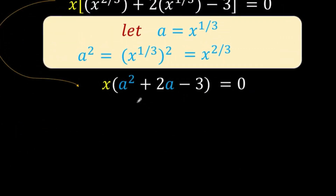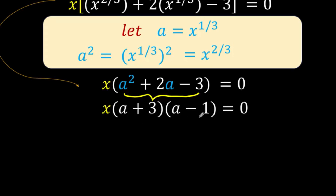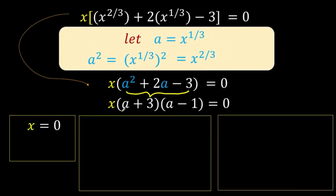From this, notice that a squared plus 2a minus 3 is factorable. The factors of this trinomial are the quantity a plus 3 times the quantity a minus 1. We copy the x and equals 0. We now have 3 factors whose product is 0, meaning at least one of them must equal 0. That means x equals 0, or a plus 3 equals 0, or a minus 1 equals 0.